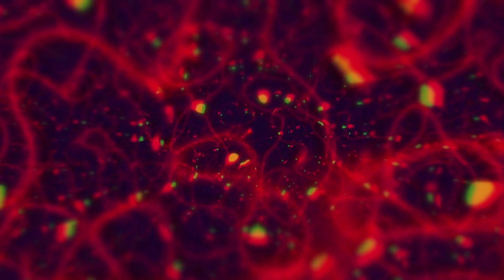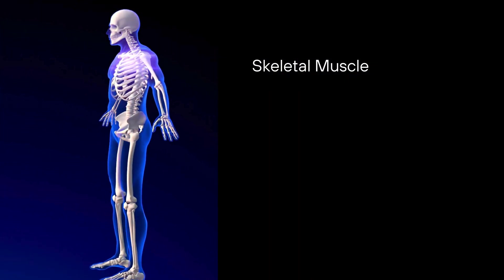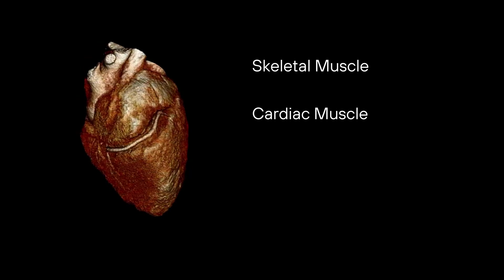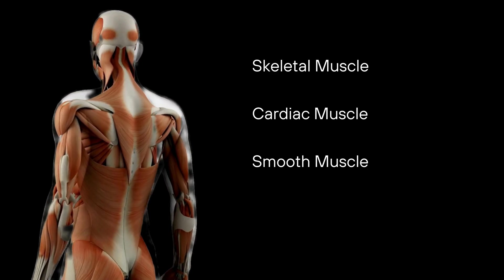There are three main types of muscle tissue. Skeletal muscle, responsible for voluntary movement of the skeleton. Cardiac muscle, which forms the walls of the heart. And smooth muscle, found in the walls of hollow organs.